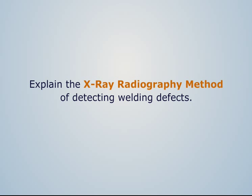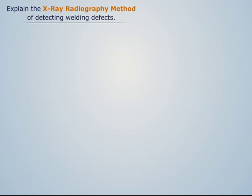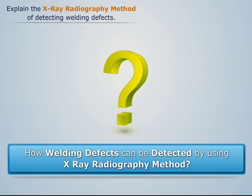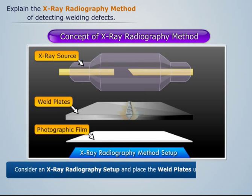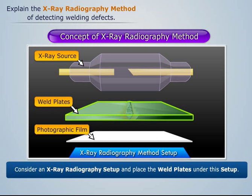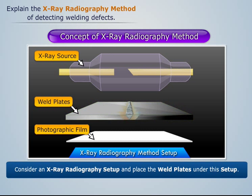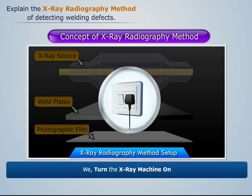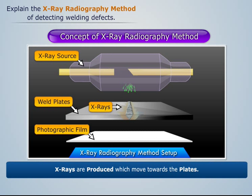Explain the X-ray radiography method of detecting welding defects. To understand how welding defects can be detected by using the X-ray radiography method, let us consider an X-ray radiography setup and place the weld plates using this setup. Now when we turn the setup on, we see that the X-rays are produced which move towards the plates.